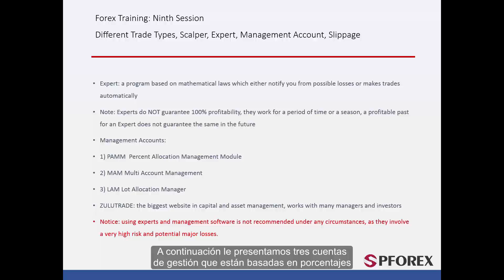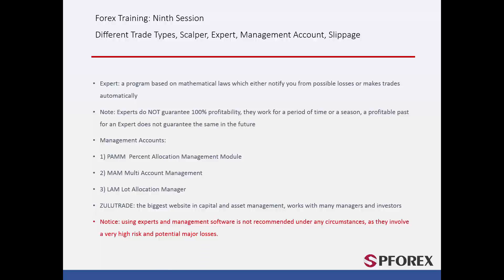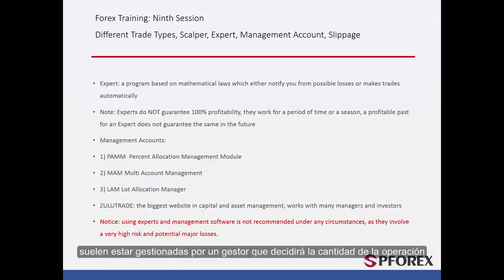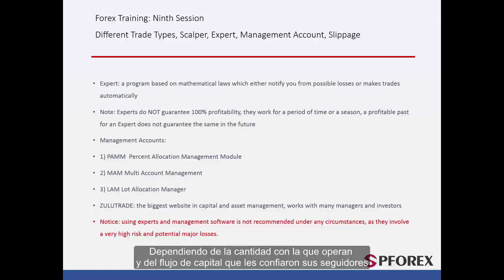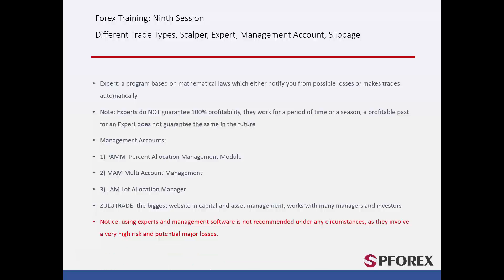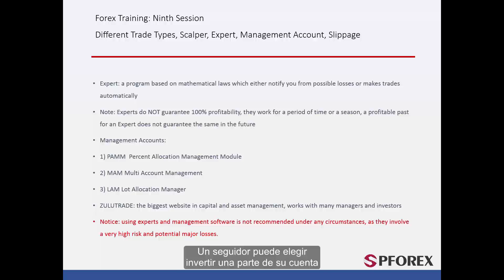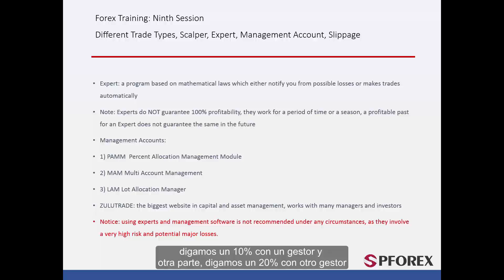There are three management accounts based on percentage. The first type is PAM, or Percentage Allocation Management Module. PAM accounts, which are more recognizable with brokers, are usually handled by one manager who will decide the trade amount. Based on the amount they trade and the capital trusted to them by their followers, capital will be divided into different accounts. A follower can choose to invest a portion of their account, say 10%, with one manager and another portion, say 20%, with another manager.